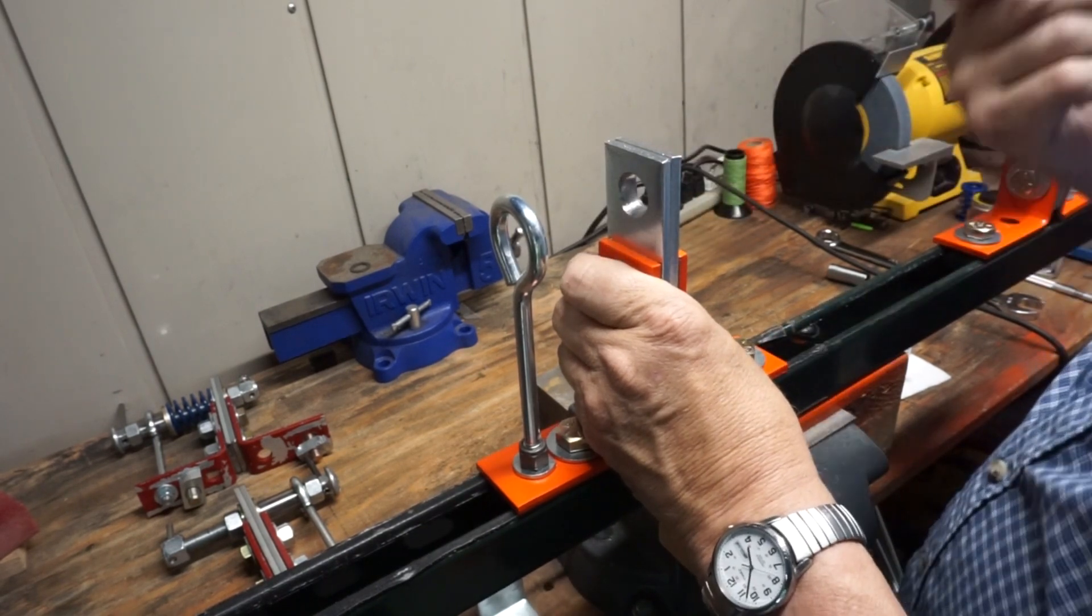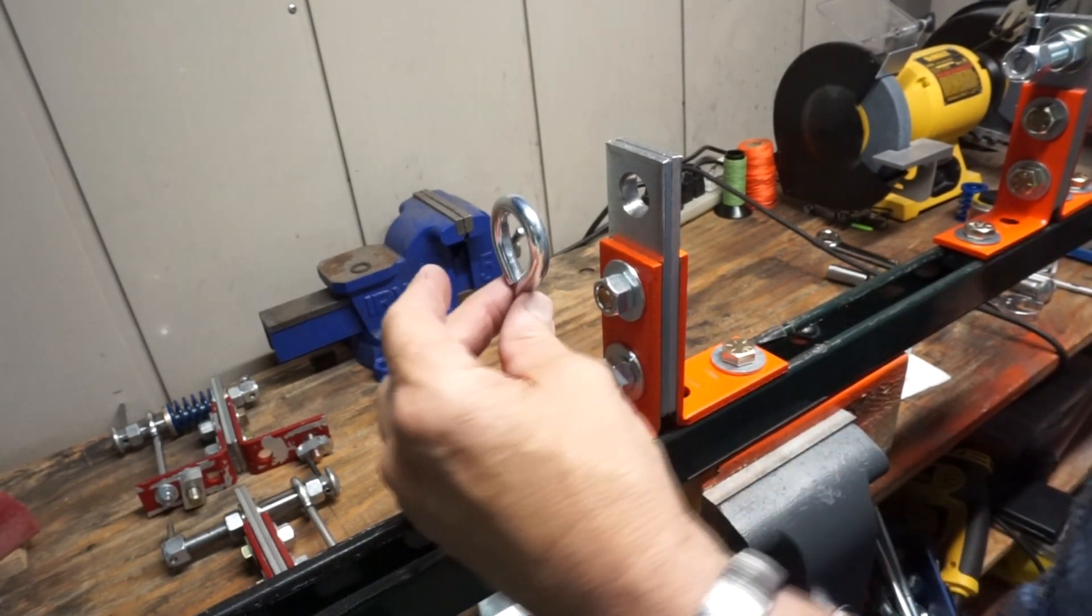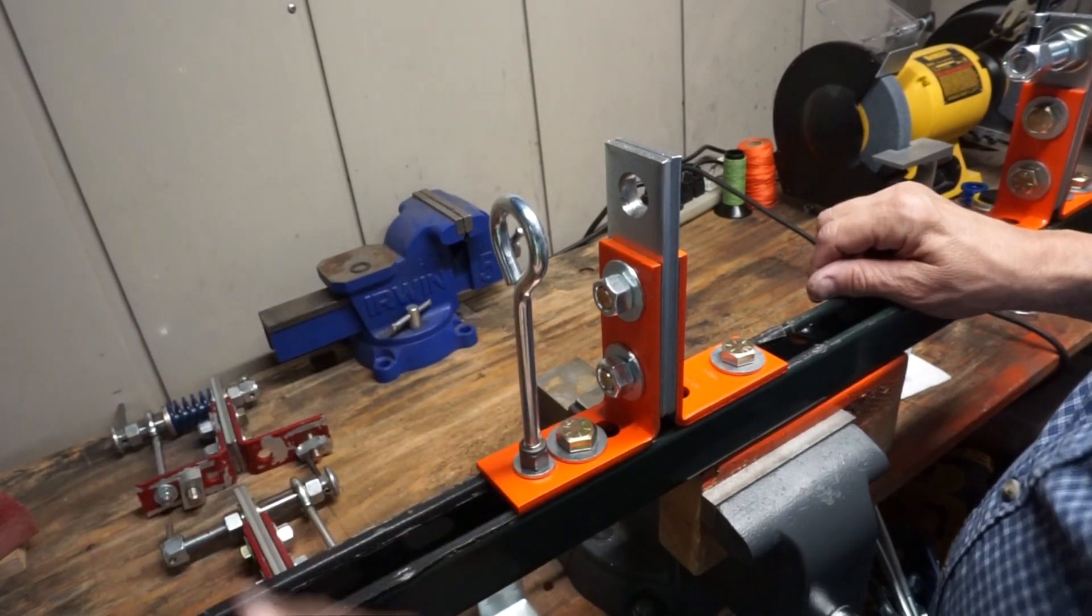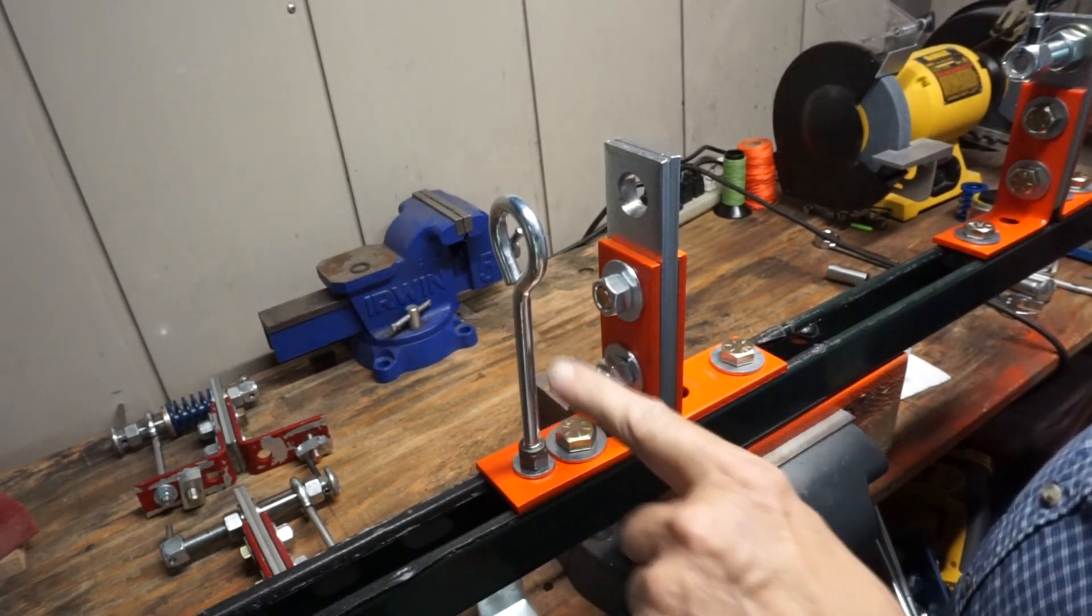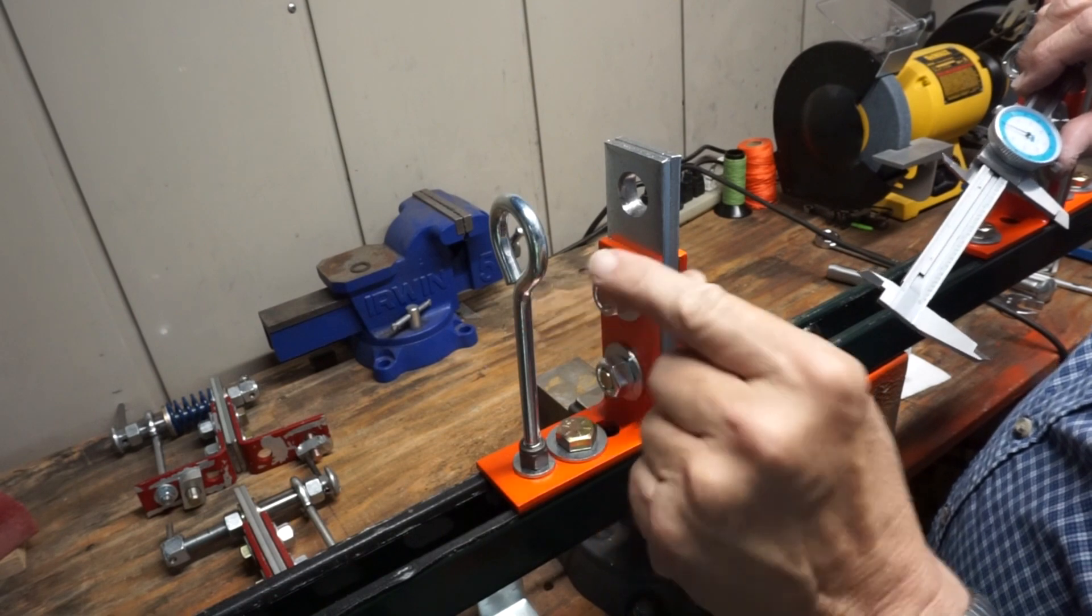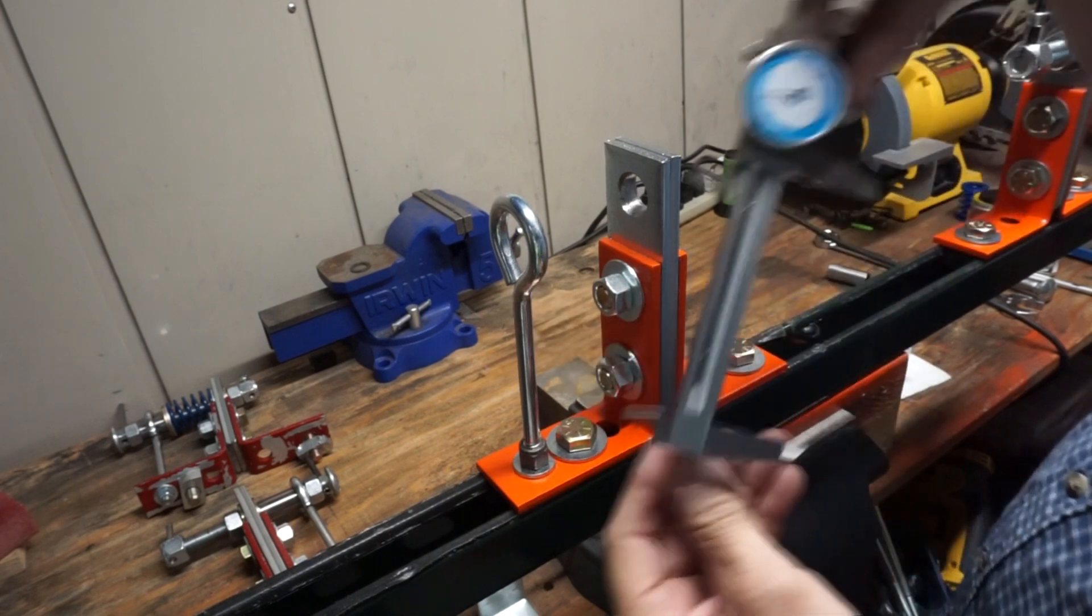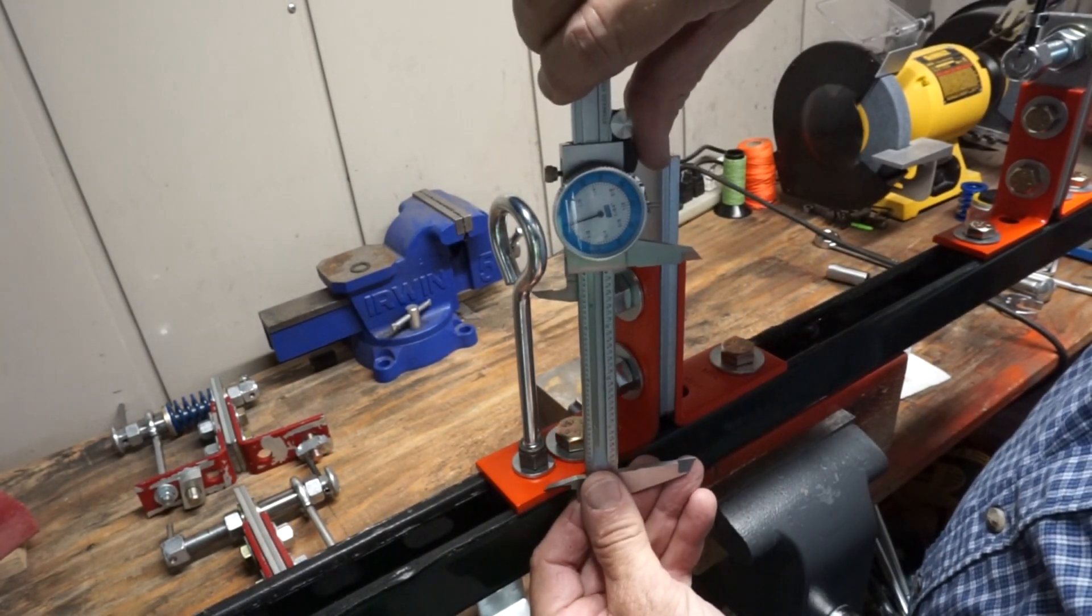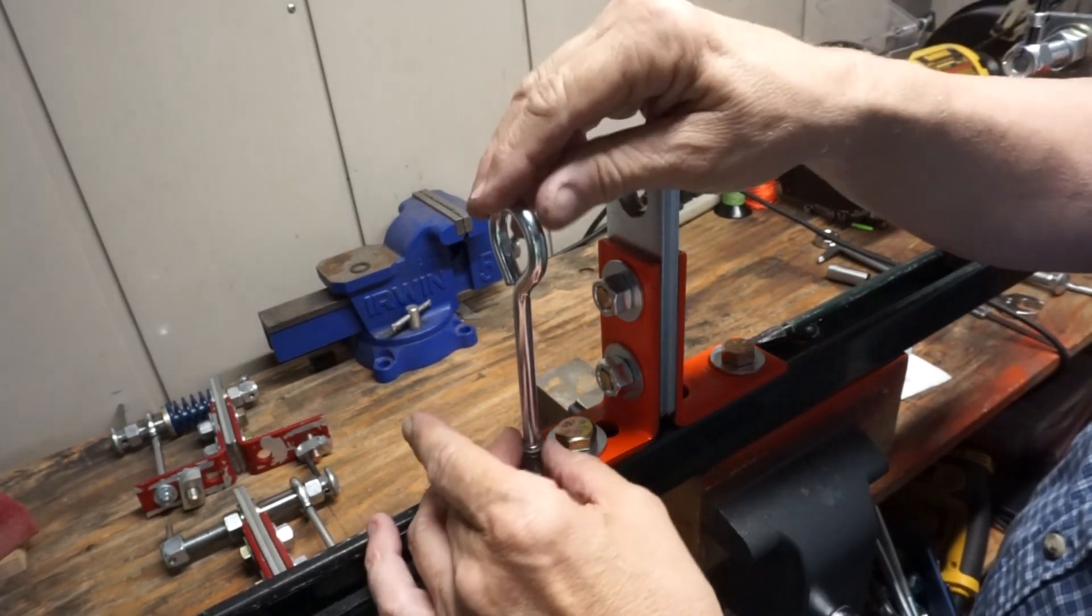Once you get it so it runs through real nice like that, you can then proceed. I have already attached my eye bolt onto here, and a good starting measurement for your eye bolt: I go from right where the curve meets the shank, right here, from here down roughly four inches.